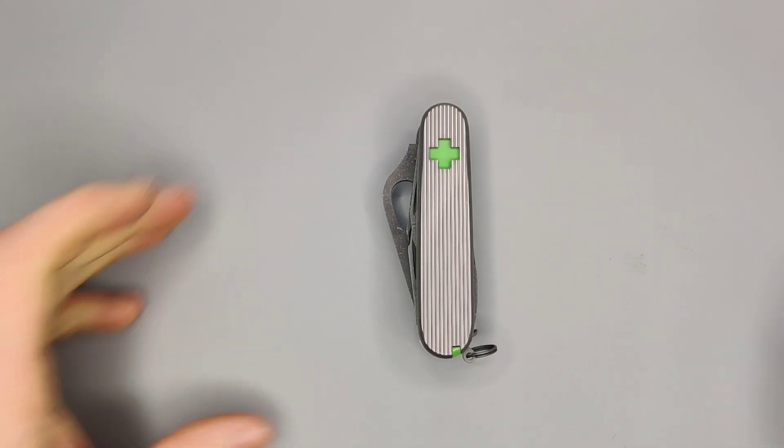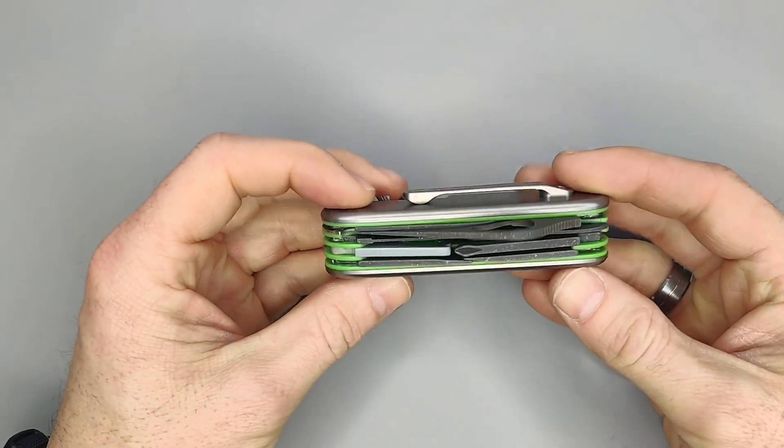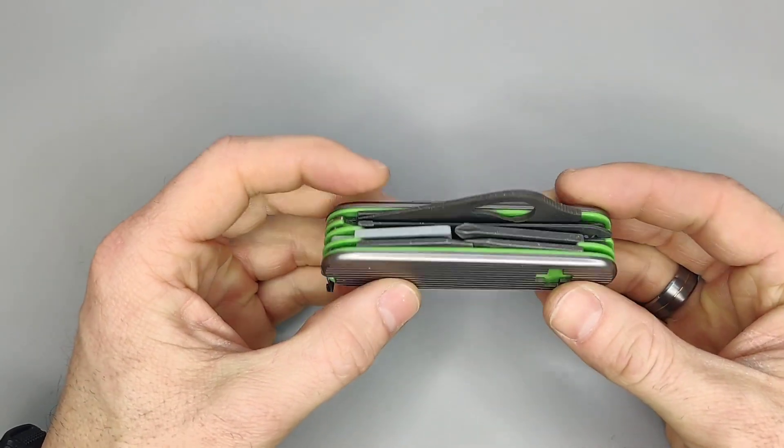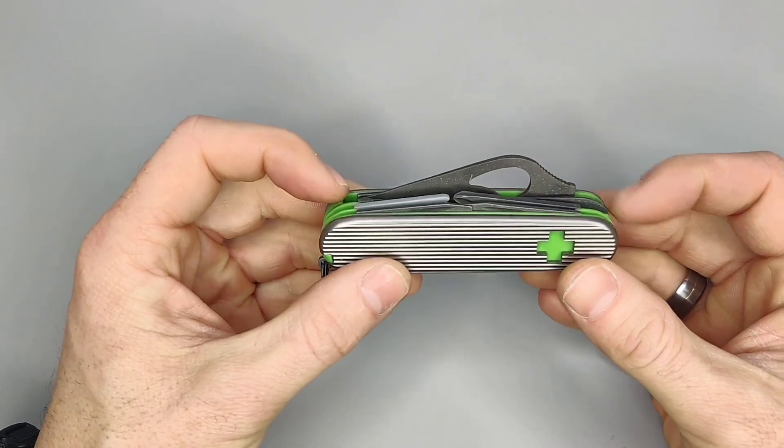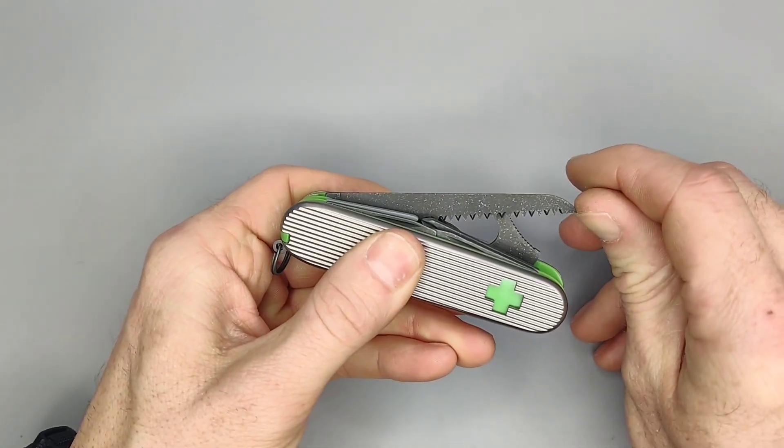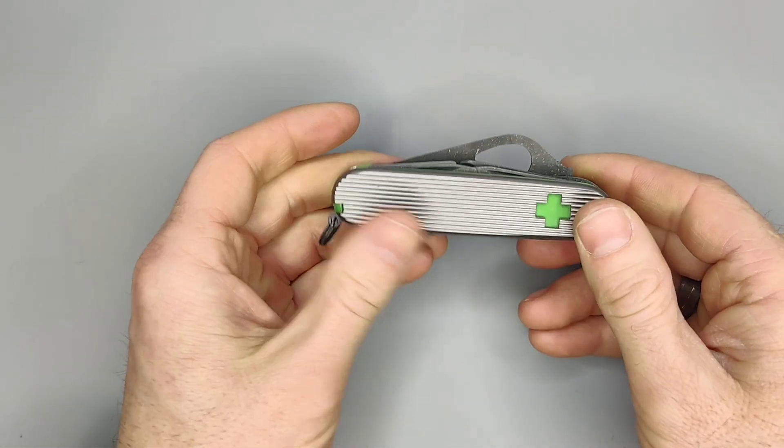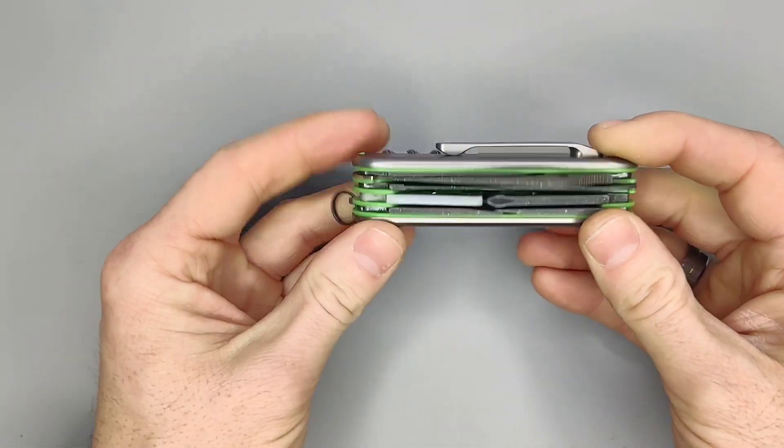Welcome back to the Fit to Survive channel, thanks for tuning in again. Today I'm going to be showing you another Spyderco, this is kind of a setup of an Explorer except we replaced the scissors with a saw. I guess you'd call it an Explorer Camper, I don't know, maybe there's a special name for it.